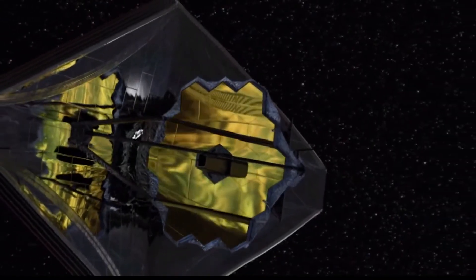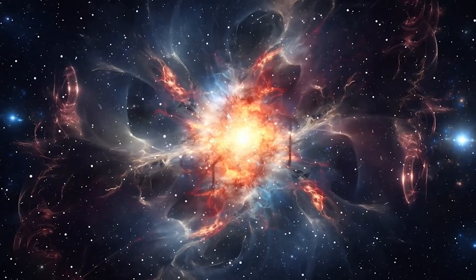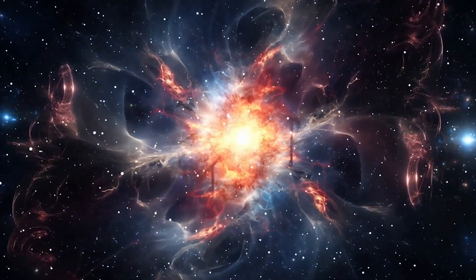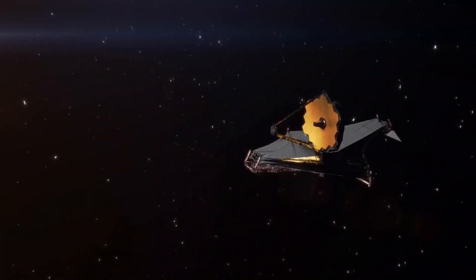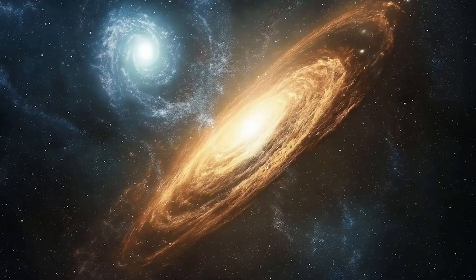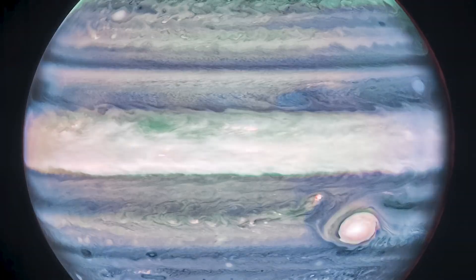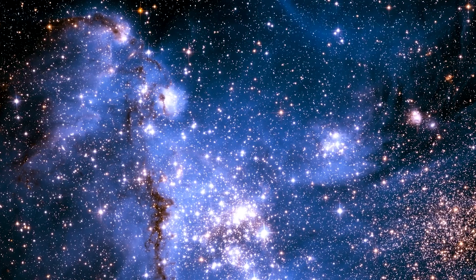When astronomers pointed the James Webb Space Telescope toward the most ancient light in existence, they expected to see the faintest newborn galaxies, small and chaotic. But instead, Webb revealed something no one was prepared for.